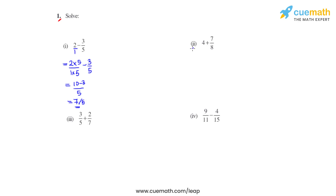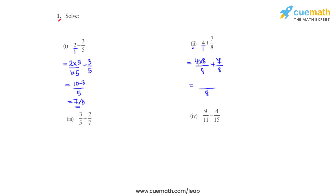Coming to the second bit, we again do not have the same denominator. The denominator for 4 is 1, and the LCM of 1 and 8 is 8. Our objective is to make the denominator for 4 also 8, so we will multiply it with 8 in the numerator and 8 in the denominator and add it with 7 eighths. Now 4 times 8 is 32. We take the common denominator as 8, and 32 plus 7 gives us 39.